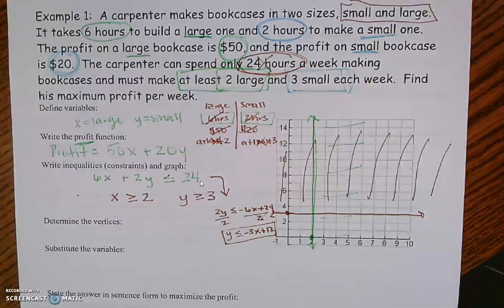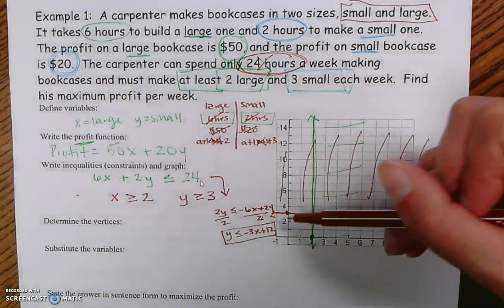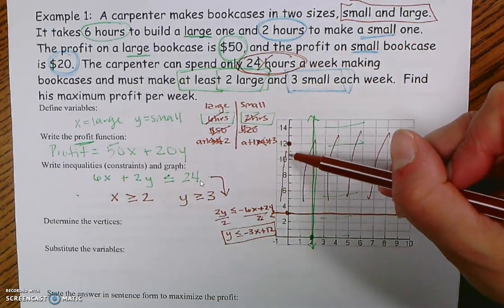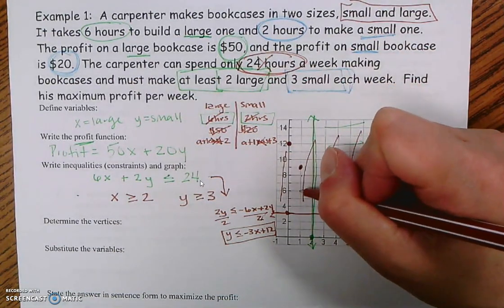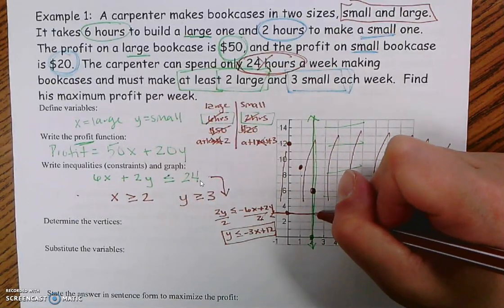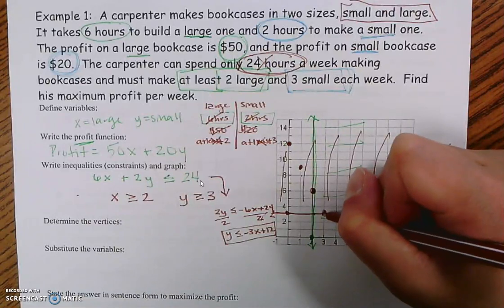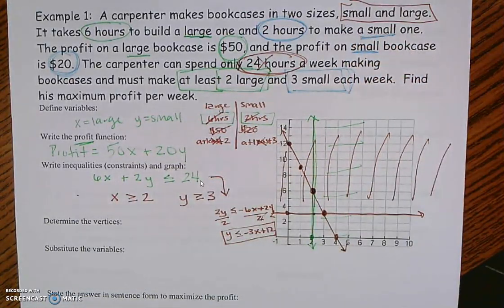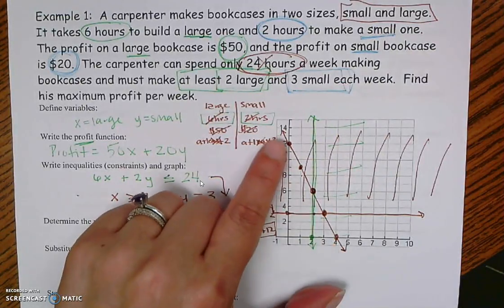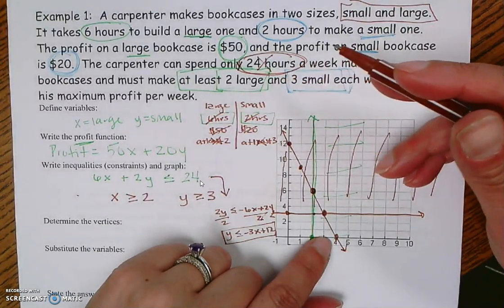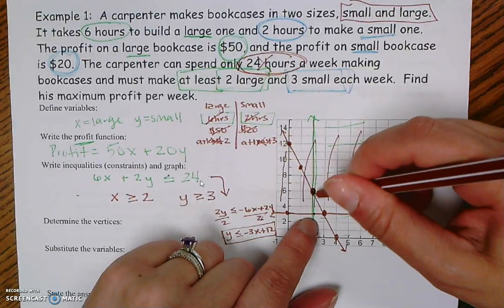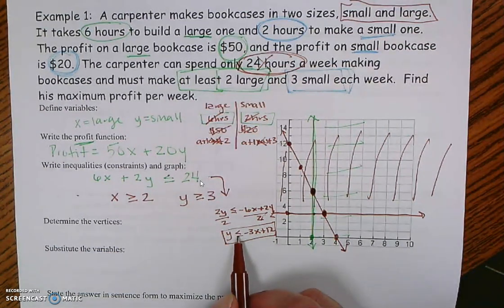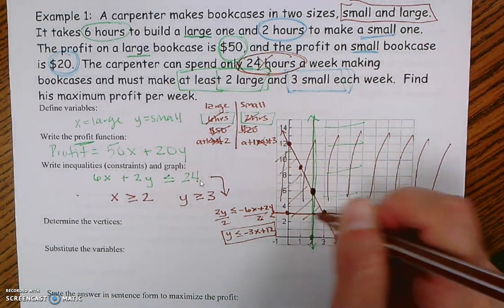Now, with y ≤ negative 3x plus 12: I start at the y-intercept of positive 12, and my slope of negative 3 tells me to go down 3 and over 1. I plot points carefully: down 3, over 1, repeated across the graph. I need to be very explicit in making all of those points all the way across. These dots must be very accurate because the next step will be harder if I don't do that correctly. Since this is less than, I shade below the line.